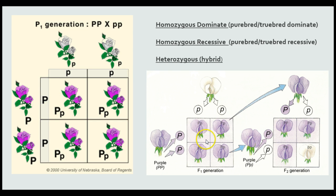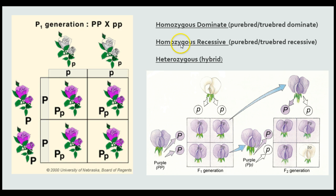Looking back at the Punnett squares, I want to go over three different conditions: homozygous dominant, homozygous recessive, and heterozygous — which means hybrid. In a homozygous dominant situation, both alleles are the same for the dominant condition, so our purple flowers with big P, big P are homozygous dominant. The white flowers with little p, little p are homozygous recessive — homozygous means they have the same allele and recessive means it's the non-dominant one. Heterozygous means hybrid: it has one big P and one little p.